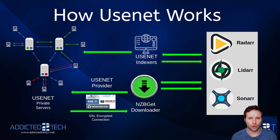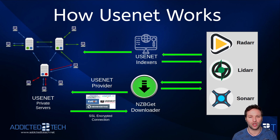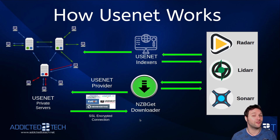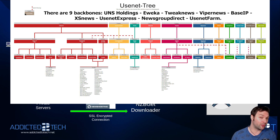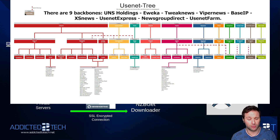Usenet works differently to BitTorrent. BitTorrent is a peer-to-peer network — it works by sharing a file from one person to another and is essentially free, unless you use a private tracker. You will need to find a usenet provider, which you can find online. I personally use News Hosting; I have no affiliation with them, that's just my choice. Sometimes different providers have different backbones — different private servers — so they may have access to content another provider won't, which can be useful for rare or older content.